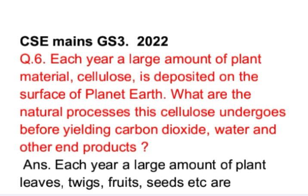Plants ke leaves, twigs, fruits, seeds etc. ground pe girte rehte hain aur samay ke saath in ka decomposition hota rehta hai. In plant material mein cellulose ek main component hota hai. This question is about natural processes of decomposition of cellulose yielding carbon dioxide, water, and other end products.